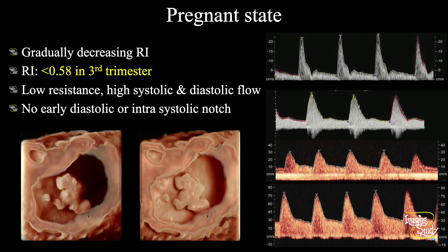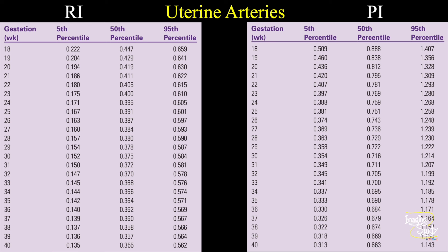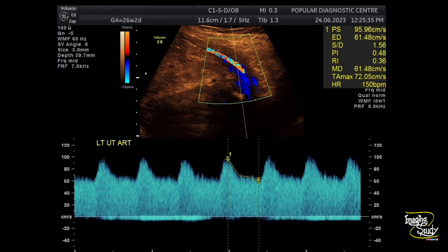In the third trimester, the RI should be less than 0.58. The diastolic flow will increase with time and we'll see the absence of the early diastolic notch in the third trimester. There are reference charts available in websites, books, and the Fetal Medicine Foundation website; you can also use the IGC calculator. This is the uterine artery in a pregnant state at 26 weeks of gestation — you can see good flow and the resistive index is 0.36, which is very good.